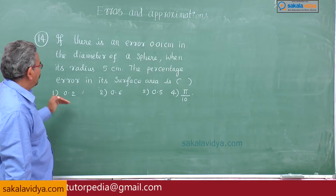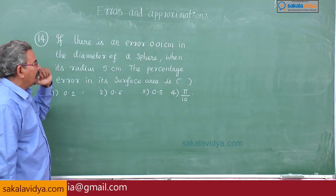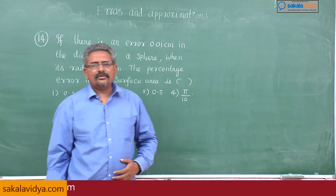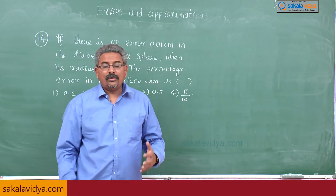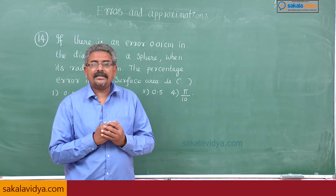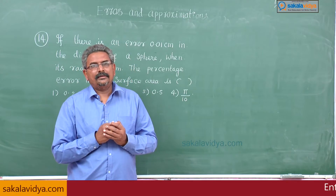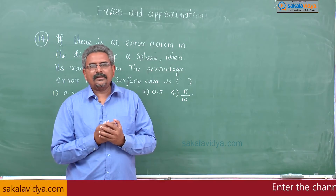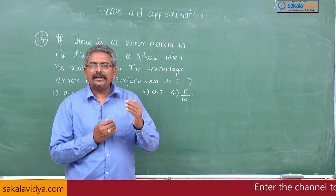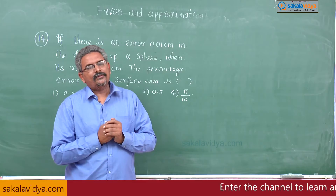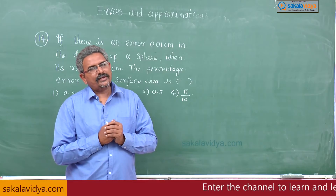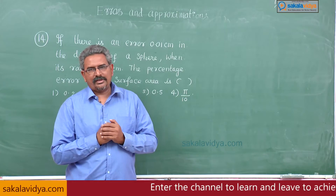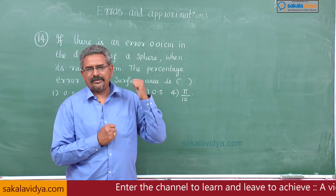We need to find the percentage error in the surface area of the sphere. The surface area of a sphere is 4 pi r squared. Now this r we have to change in terms of the diameter.